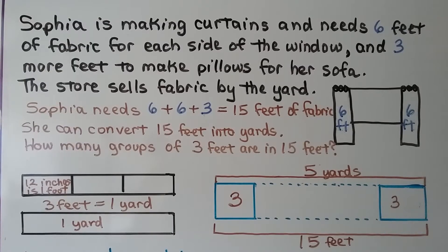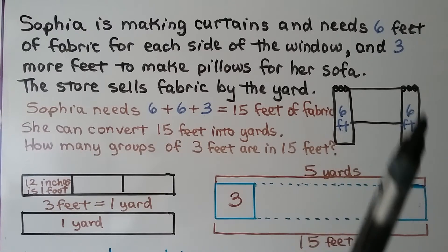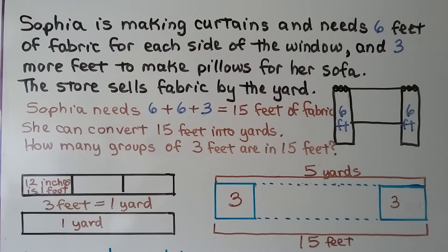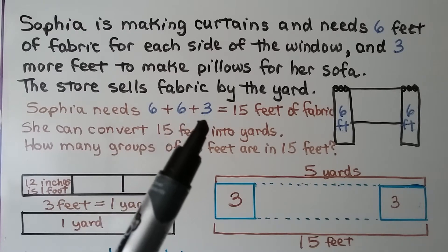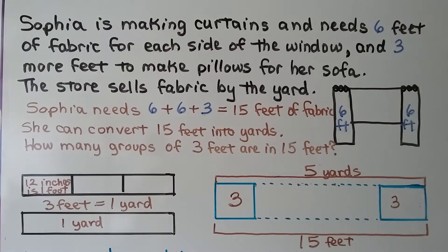Sophia is making curtains and needs six feet of fabric for each side of the window and three more feet to make pillows for her sofa. The store sells fabric by the yard. So she needs six feet plus six feet plus three feet — that's fifteen feet of fabric.